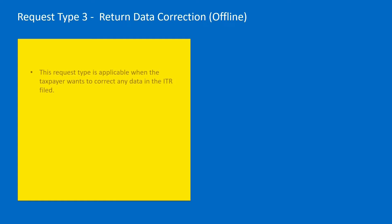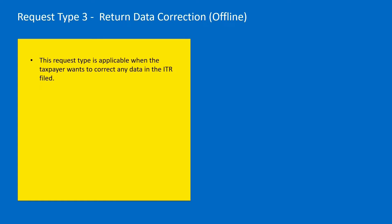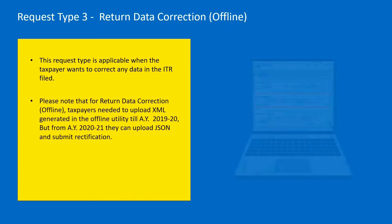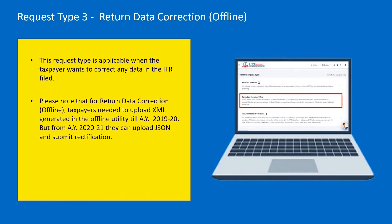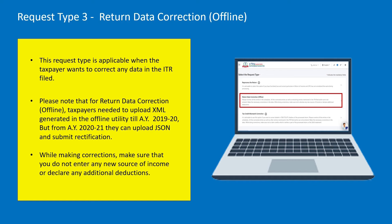You are required to choose return data correction in the offline mode. Please note that this request type is applicable when the taxpayer wants to correct any data in the ITR already filed. The taxpayer needs to upload XML generated in the offline utility for assessment year up to 2019-20; from assessment year 2020-21 onwards, they can upload the JSON. While making corrections, please make sure that you do not enter any new source of income or declare any additional deductions.